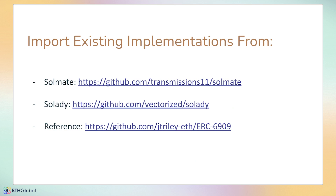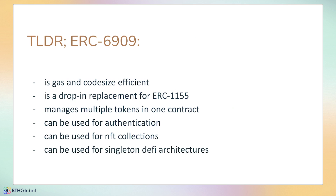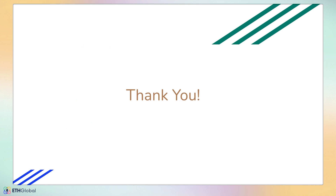Solmate has an implementation of ERC-6909, Vectorized also created one in Solady — a super optimized implementation — and I have a reference implementation linked in the EIP, which is bare bones and optimized for readability rather than gas or code size, so it's very clear what the standard is actually doing. TL;DR: ERC-6909 is gas and code size efficient, removes unnecessary complexity, and is a drop-in replacement for ERC-1155. You can manage multiple tokens — fungible, non-fungible, semi-fungible — in one contract. It can be used for token-based authentication, NFT collections, and singleton DeFi architectures across a wide range of problems.